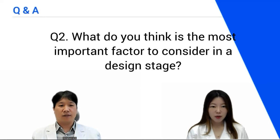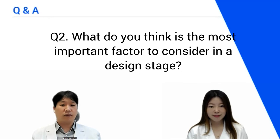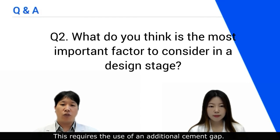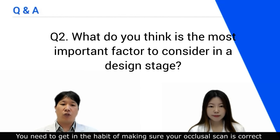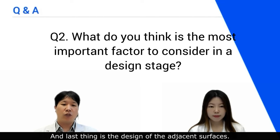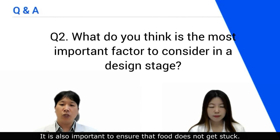Question number two: what do you think is the most important factor to consider in the design stage? Internal fit is the first priority — this requires the use of an additional cement gap. Second is the occlusion: get in the habit of making sure your occlusion scan is correct before starting to design. Last is the design of adjacent surfaces — it's also important to ensure that food does not get stuck.